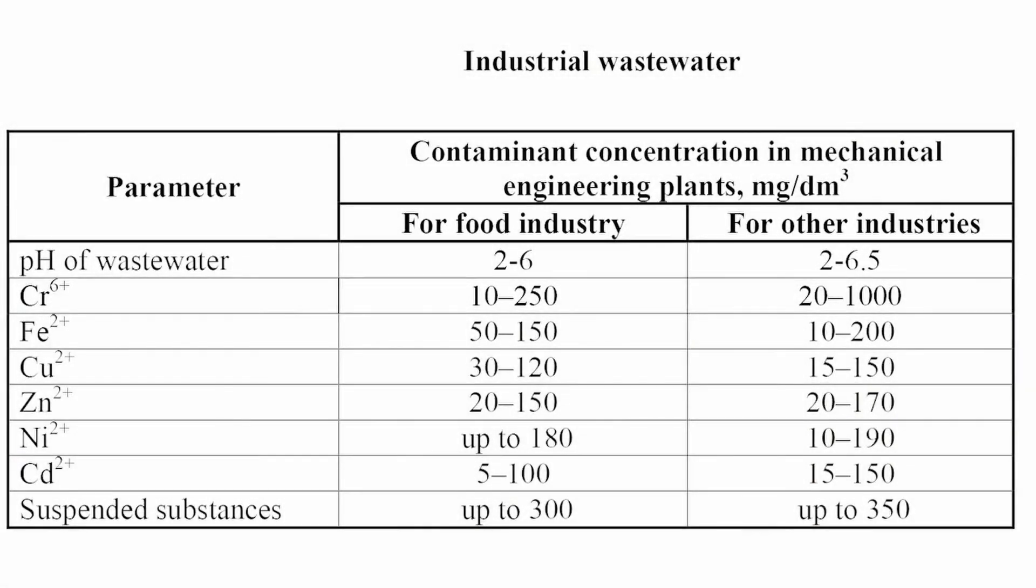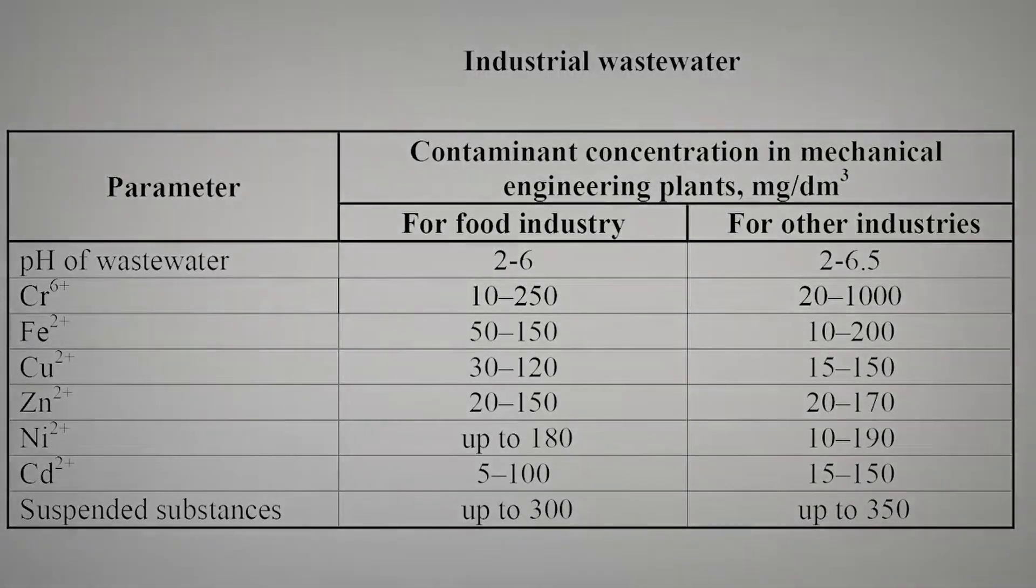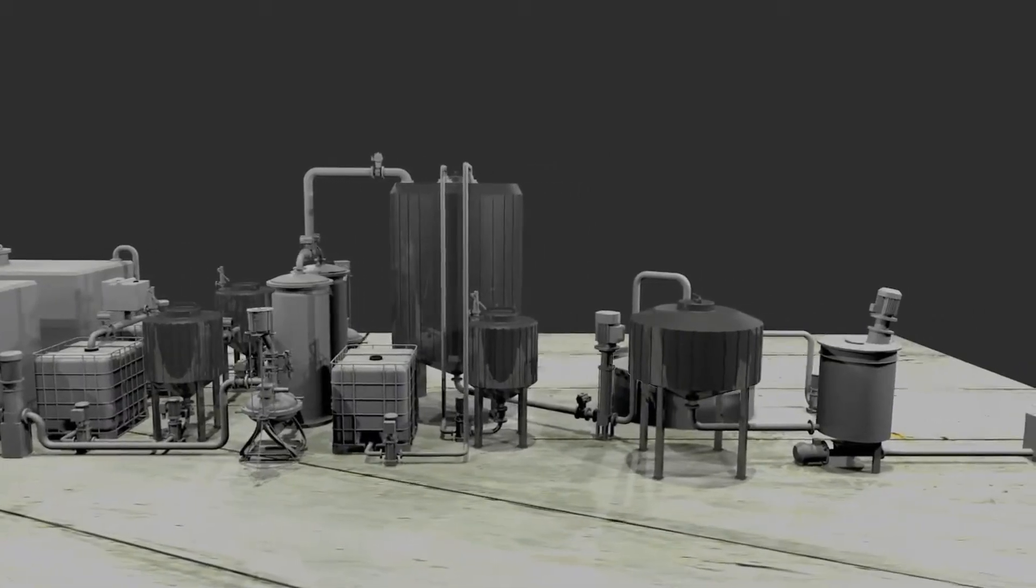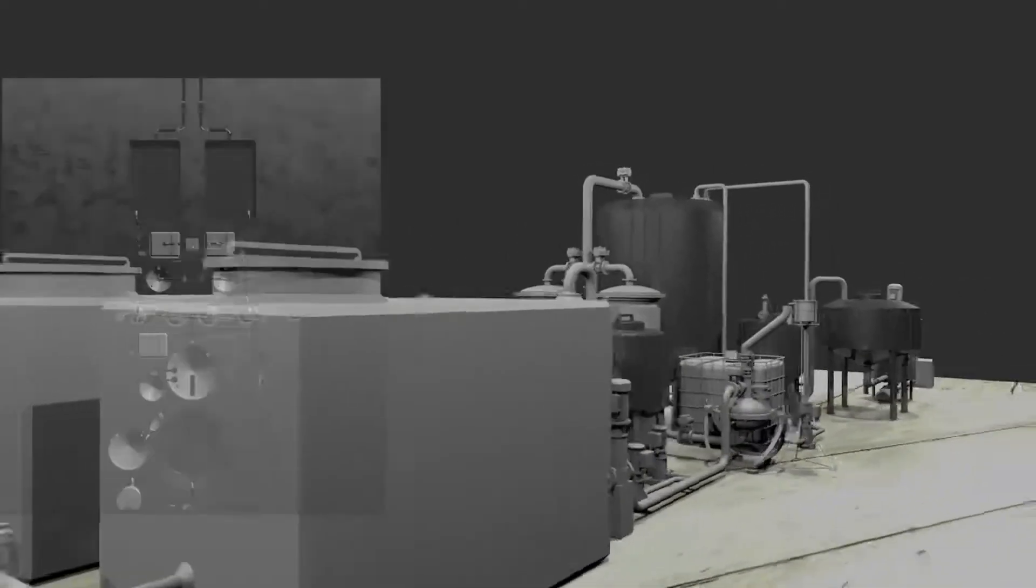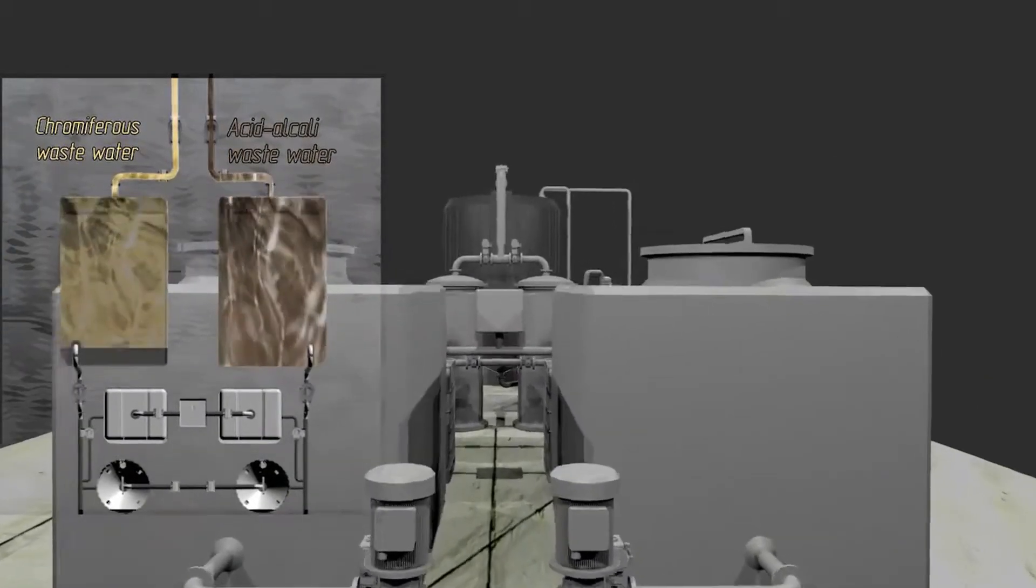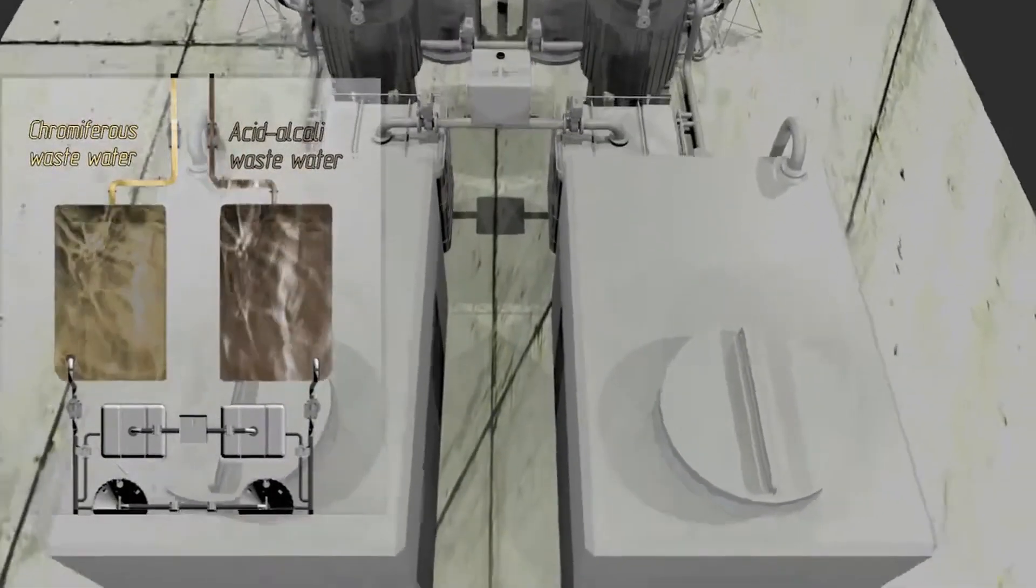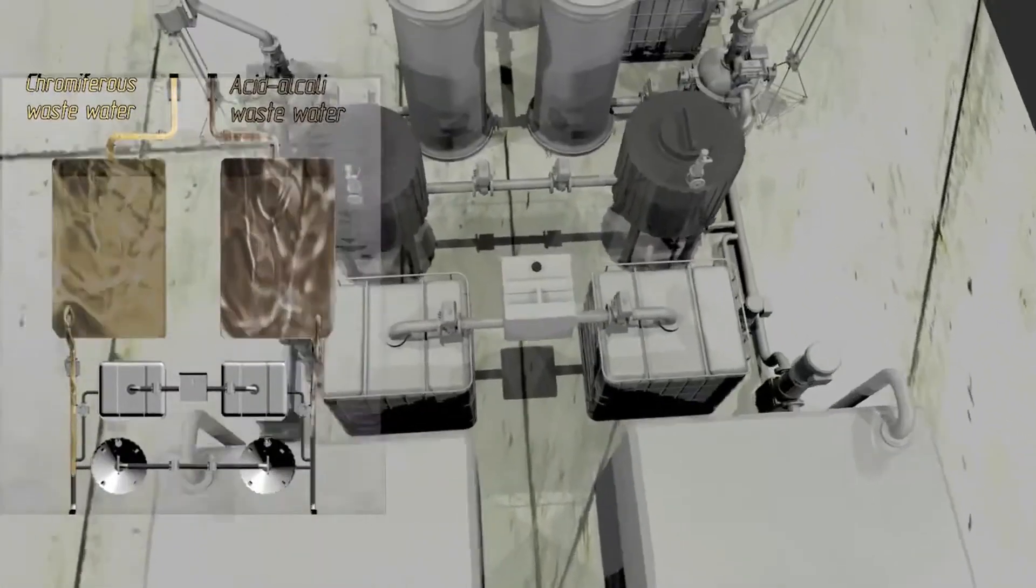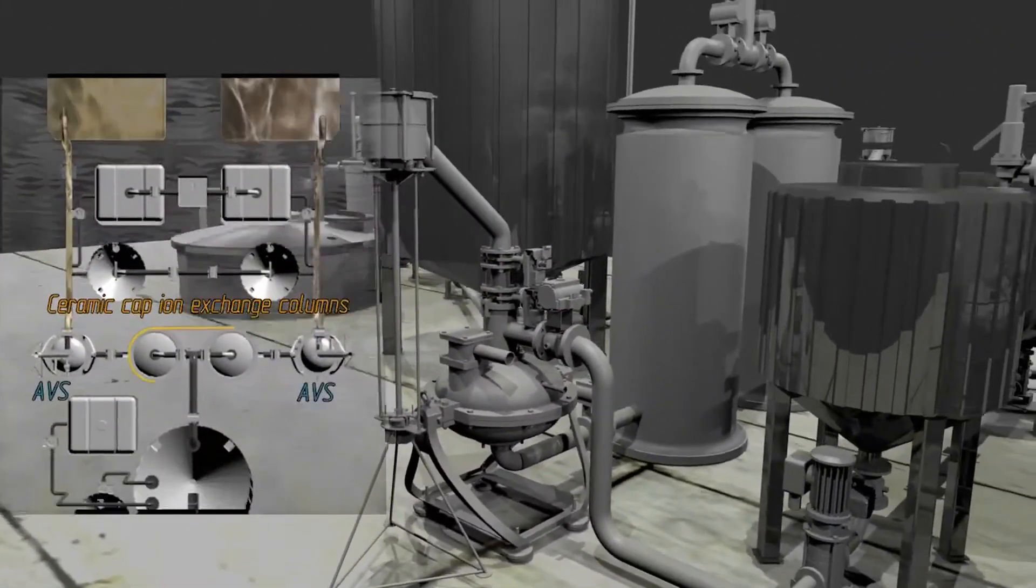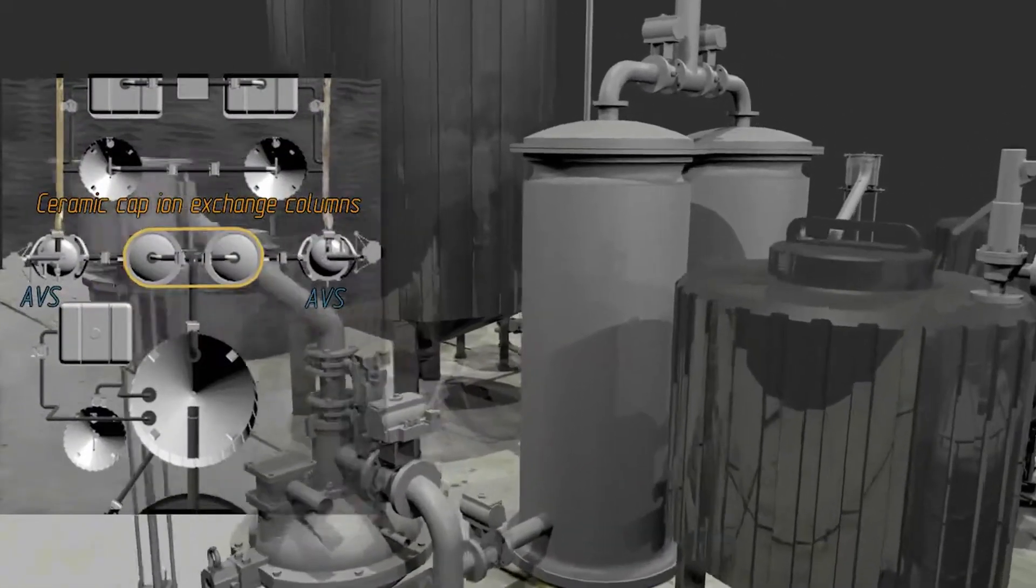Now we are going to focus on the treatment process flow diagram at an existing enterprise and show what it would be like with AVS applied. In the presented process flow diagram, simultaneous treatment of chromium-containing and acid-alkali wastewater is carried out. In an alkaline medium, both wastewater streams simultaneously enter the balancing tanks. After that, they are processed in AVS within a fraction of seconds.